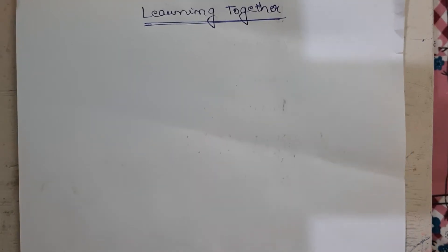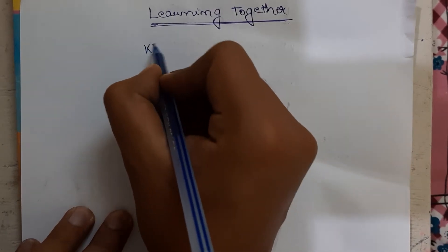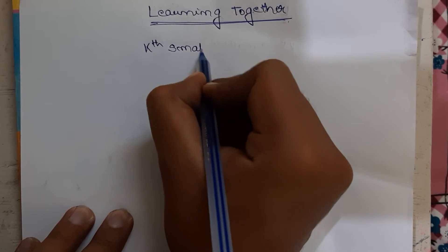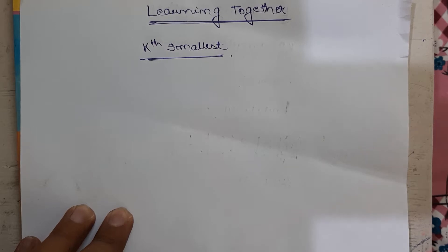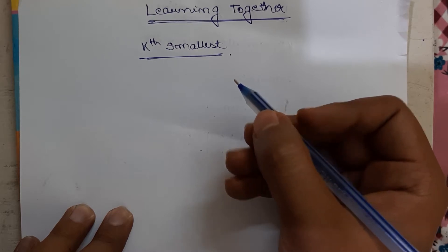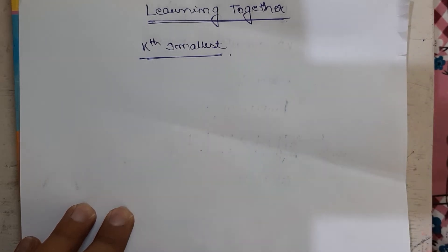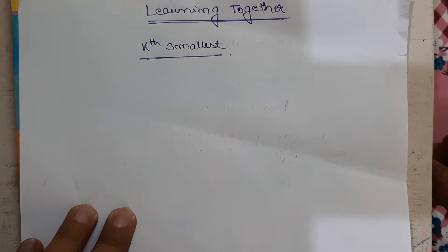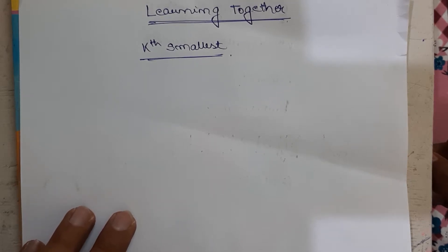Welcome friends. Today we are here to speak on a problem known as finding the kth smallest element in an array. Many people will think it is easy — we can use a sort function or any sorting algorithm, find the sorted array and print the kth element. But if you take into consideration the time complexity, then it is not the optimal solution.